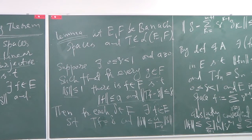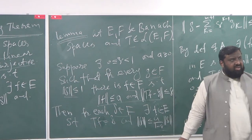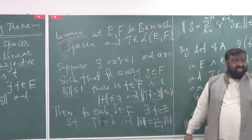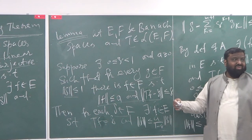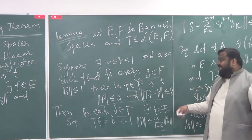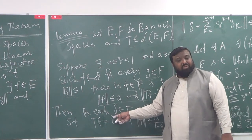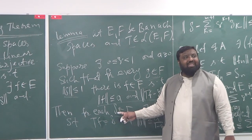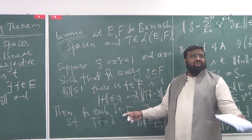The instructor explains: an arbitrary G can be of three forms — zero, norm less than or equal to 1, or norm greater than 1. If G is zero, the proposition is trivial. What we proved covers G with norm less than or equal to 1. For a generic G with norm greater than 1, we normalize it by dividing by its norm.